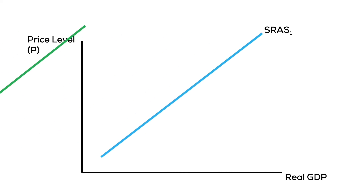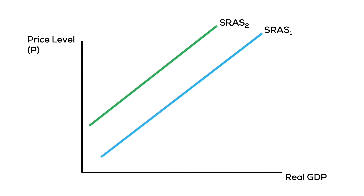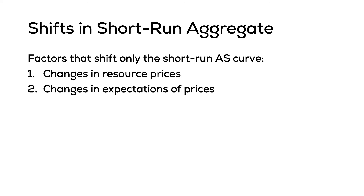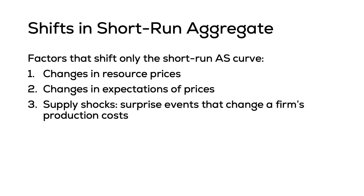The shift factors that shift the short-run aggregate supply curve are cost of resources, expectations of future prices, and supply shocks. We have introduced the aggregate demand curve and the short-run aggregate supply curve. We have one more curve to talk about, and that's the long-run aggregate supply curve, which we're going to cover in the next video.